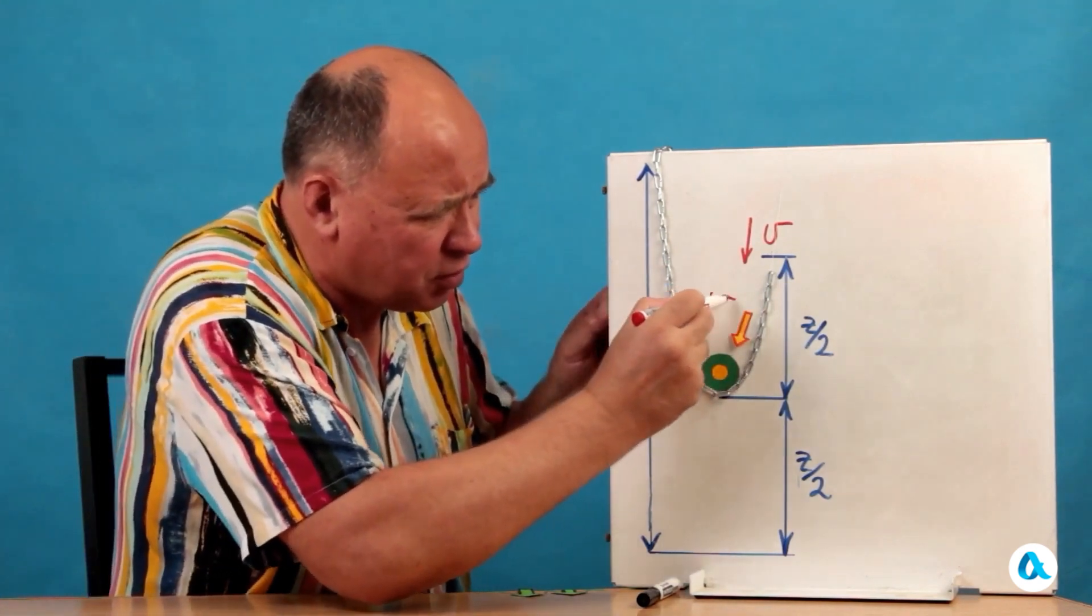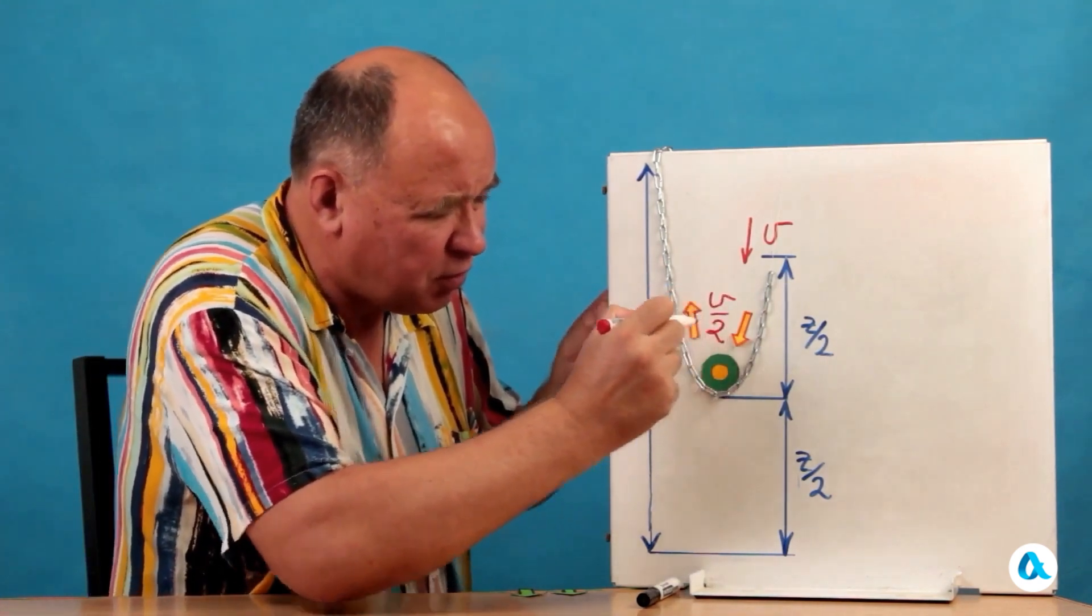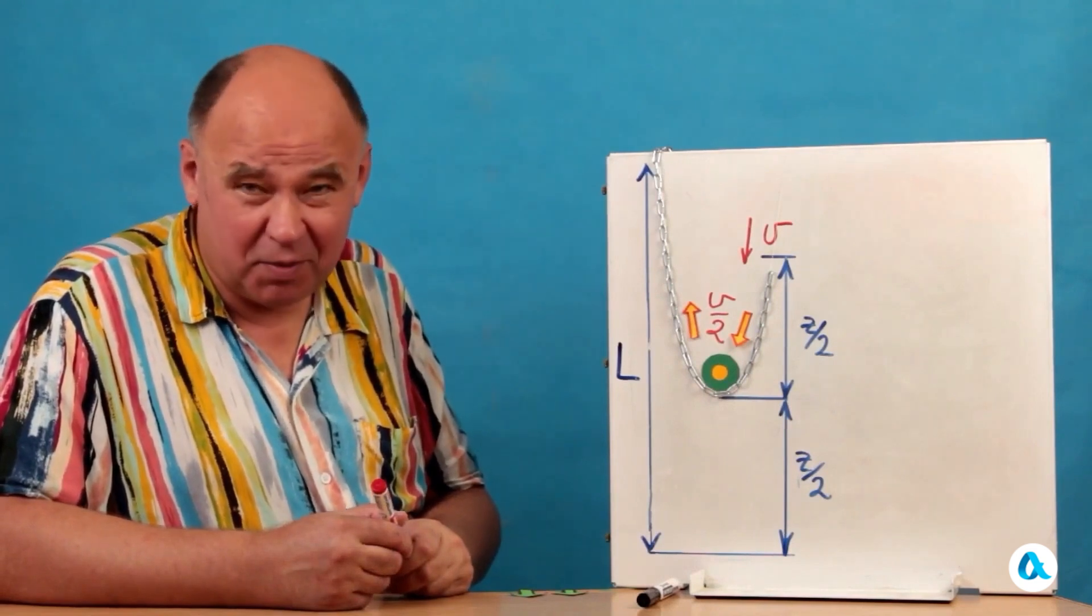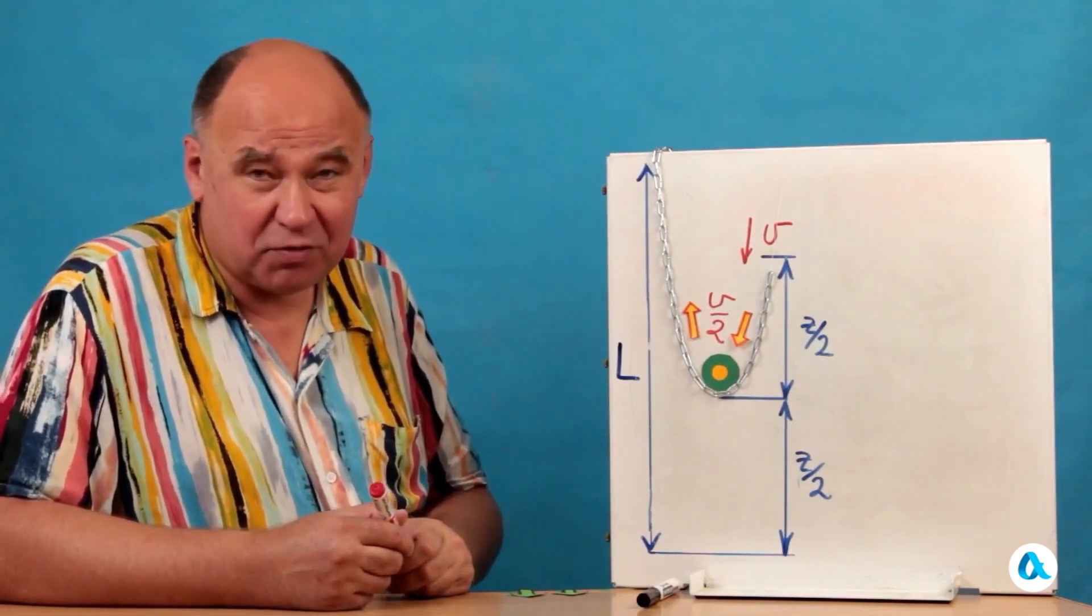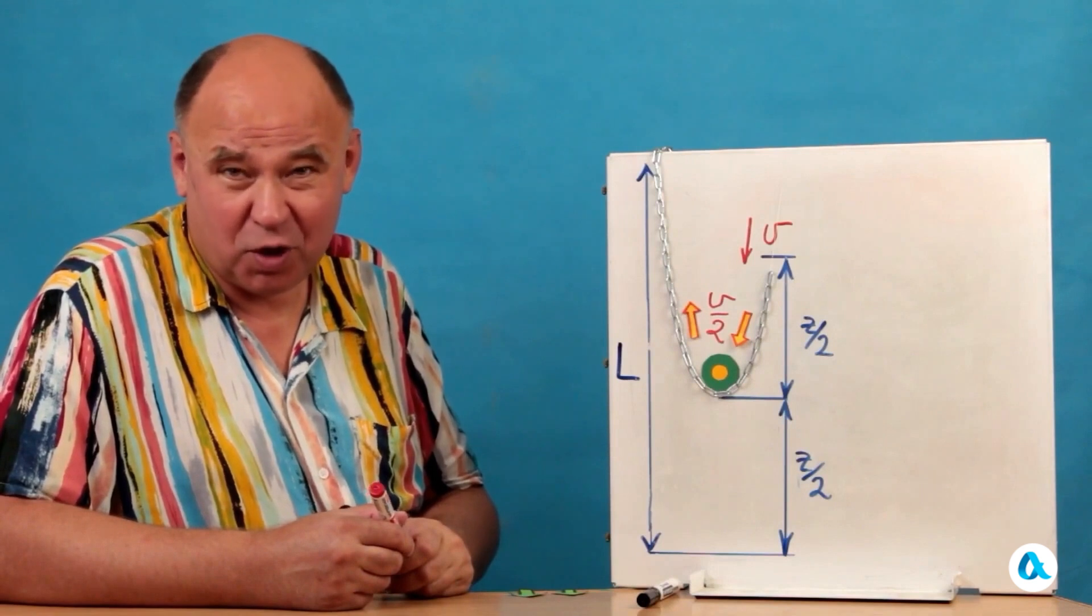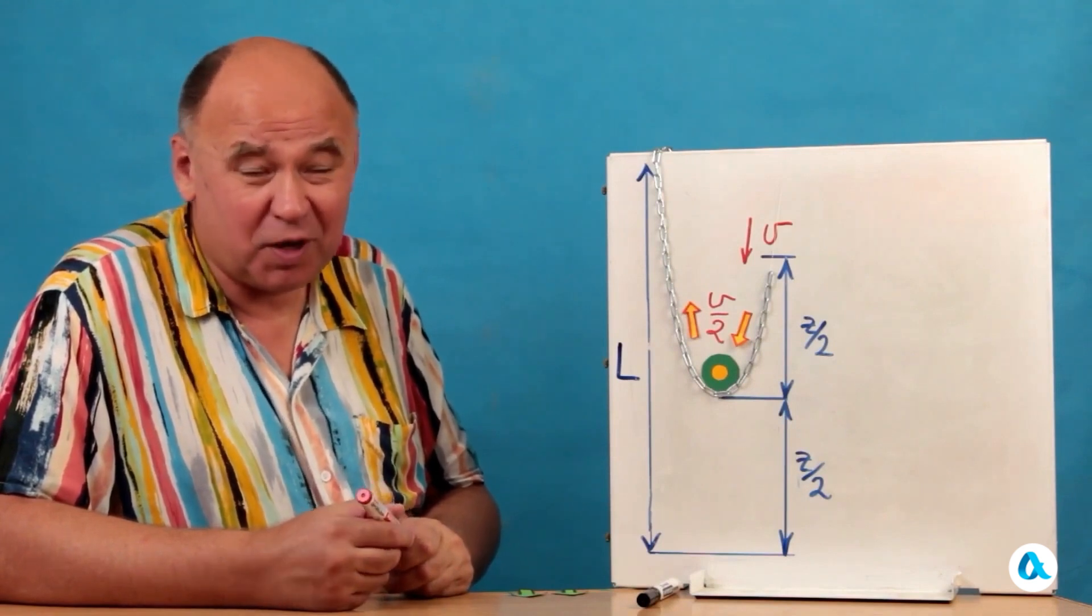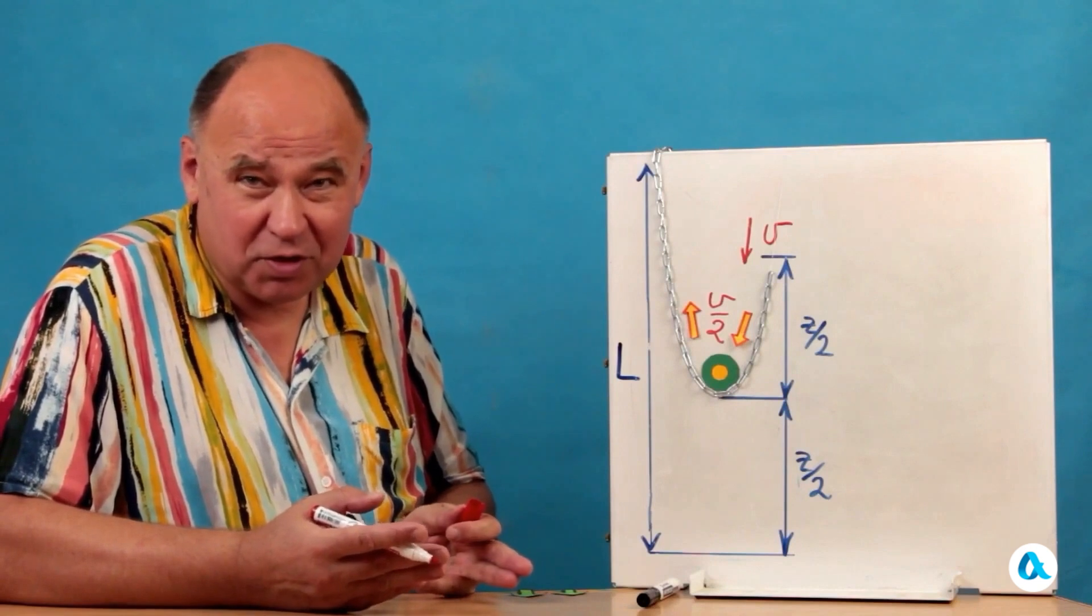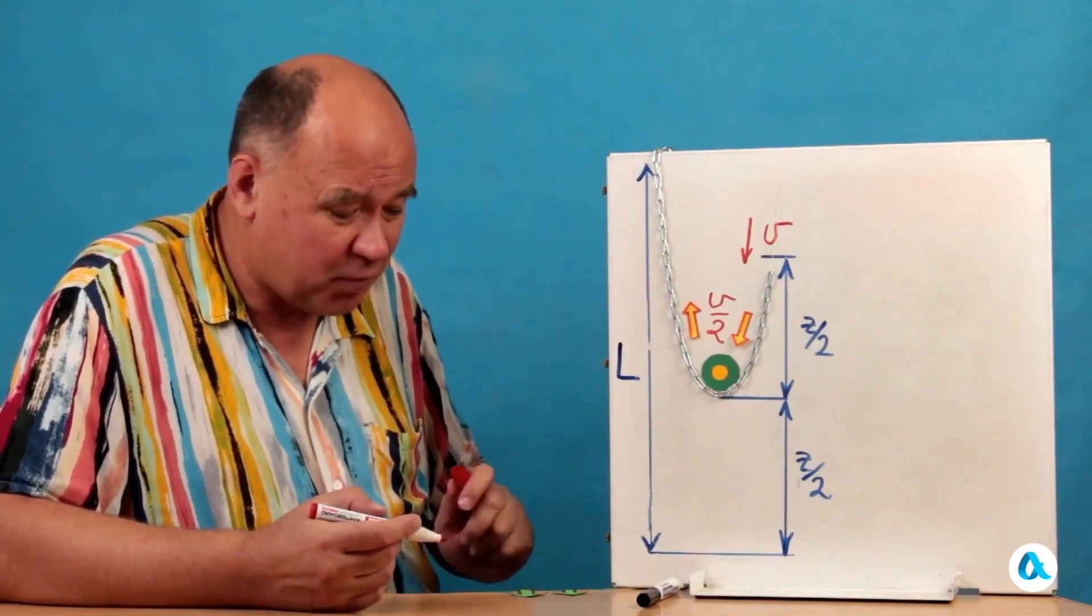Now let's find the force with which the chain acts on the block. Well, accordingly, the block, according to Newton's third law, acts on the chain. It is equal to the change in momentum of the chain per unit time.